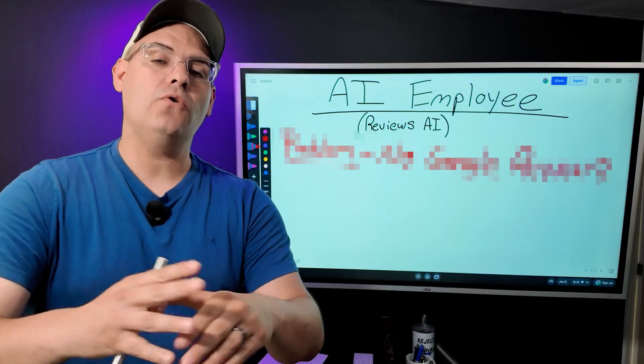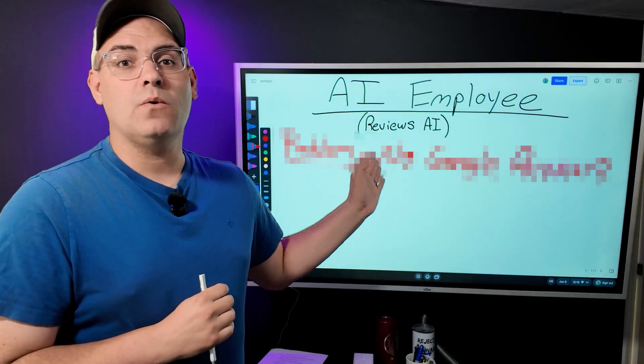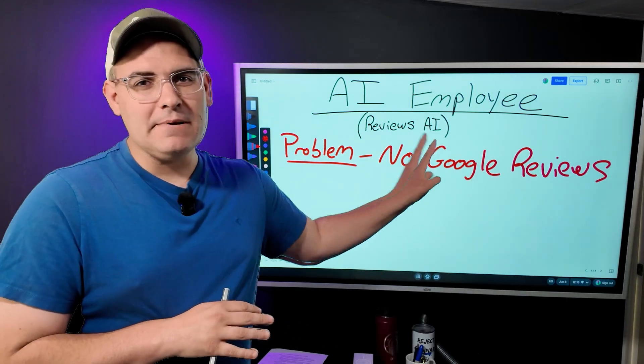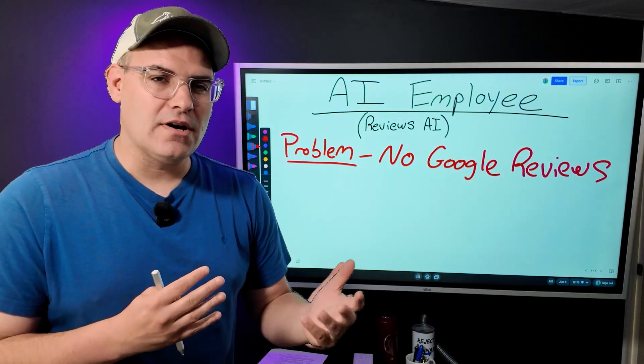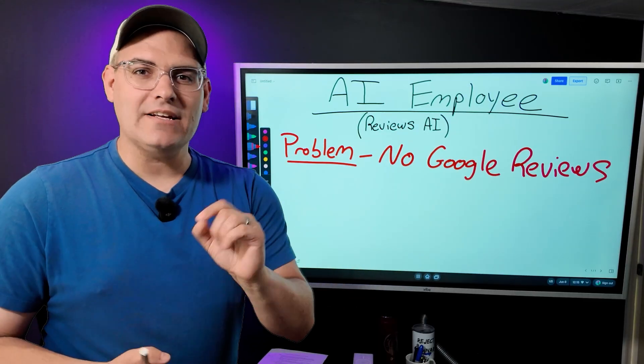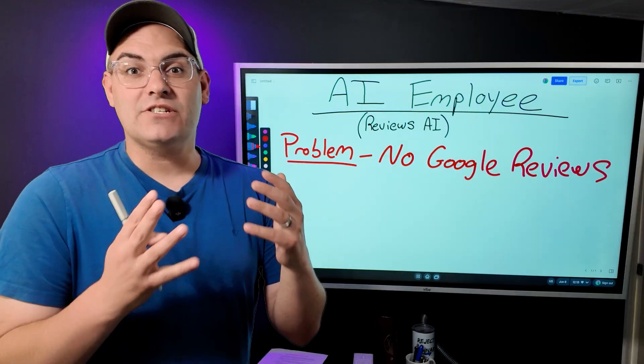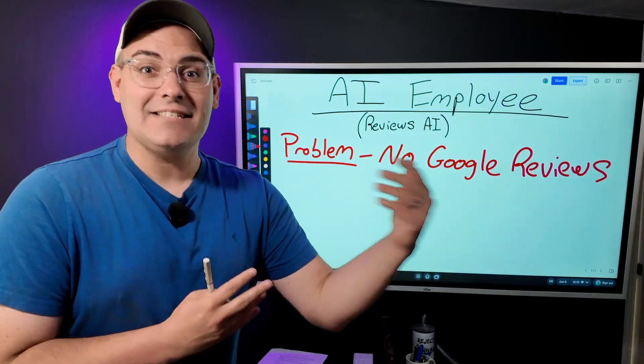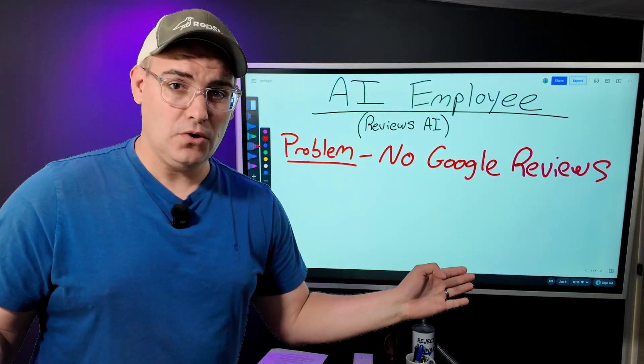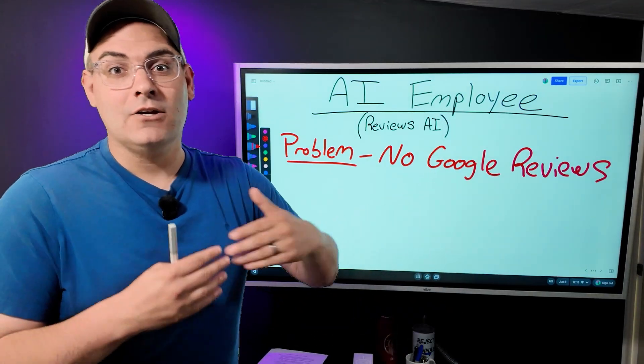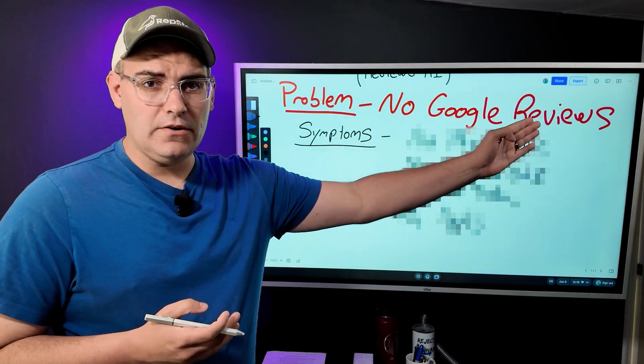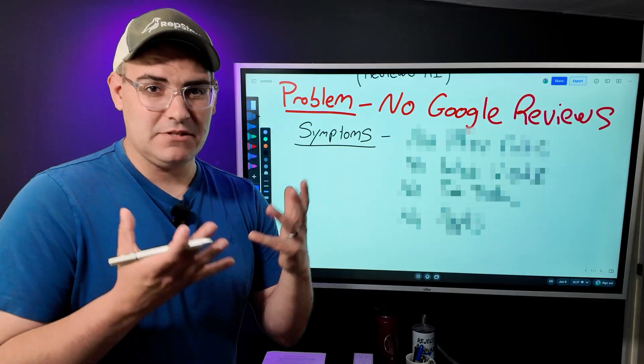Now the problem that you and I both know that reviews AI solves is when a business has no or little Google reviews. But Google reviews typically aren't something that a small business owner is going to go out and start solving at random one day. Typically they're trying to solve something else and then they discover the fact that the symptom happens because they don't have Google reviews. So if you're going out there just telling people you're going to get them more Google reviews, this might be why no one's responding to your content or your ads. And typically the problem of no Google reviews will manifest in one of these types of symptoms.